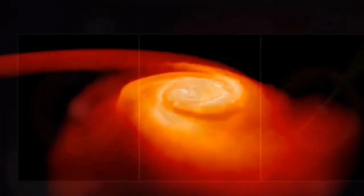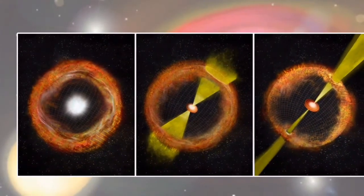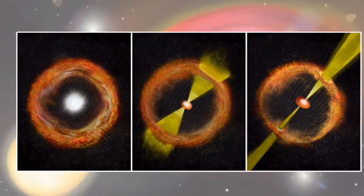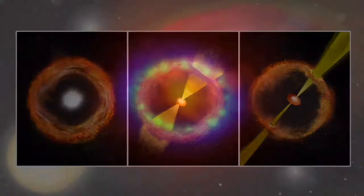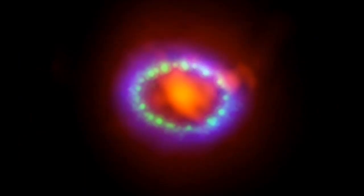Neutron stars are typically small, with diameters of about 12 miles or so, but are so dense that they weigh as much as our host star. A piece of a neutron star the size of a sugar cube can weigh as much as 100 million tons.